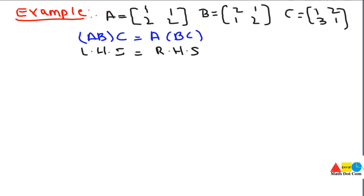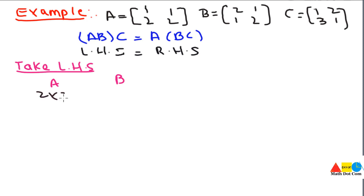Let's multiply them together. We will take the left-hand side and multiply A and B first. For multiplying A and B we have to check whether they are eligible for multiplication. The order of A is 2×2 and the order of B is also 2×2. It means the columns of A and rows of B are equal, so they are suitable for multiplication. This condition is satisfied.